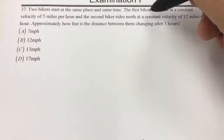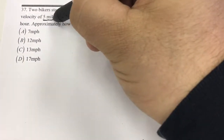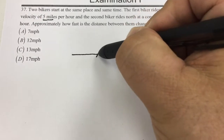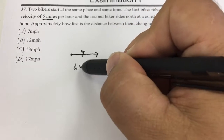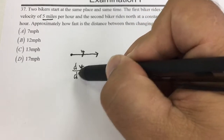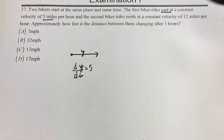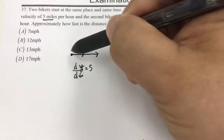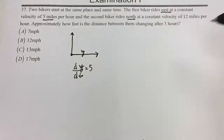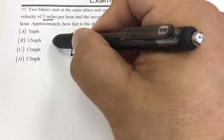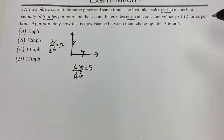For number 37, you have two bikers going east at 5 miles per hour — I'm going to call that y — so dy/dt equals 5. And another biker going north at 12 miles per hour, I'm going to call that x, and his dx/dt is equal to 12 miles per hour.